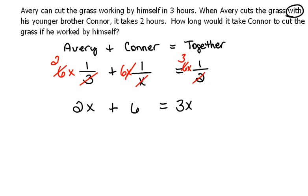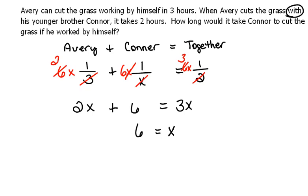Now we need to finish solving this. We want our X's together, so I'm going to subtract 2X from both sides to get 6 equals 3X minus 2X, which is X. So this tells us that Connor can do the job in six hours all by himself.